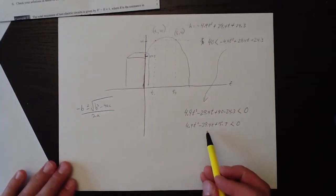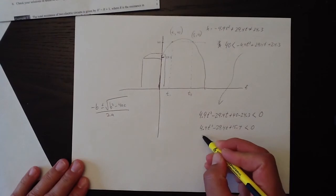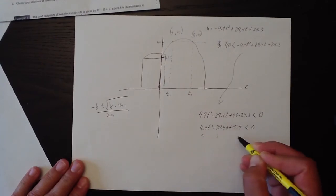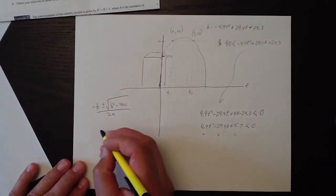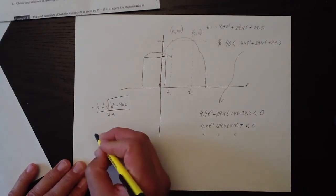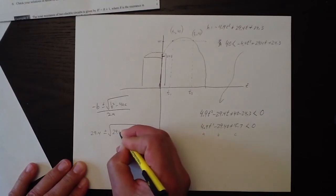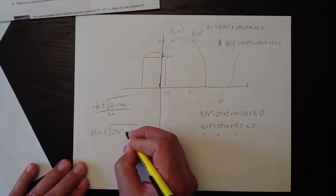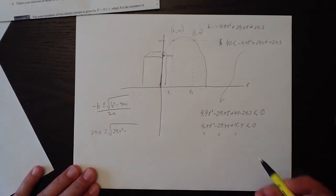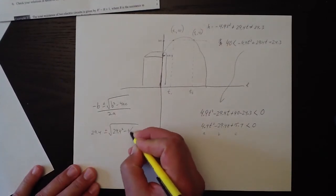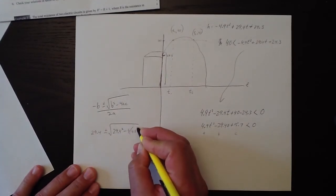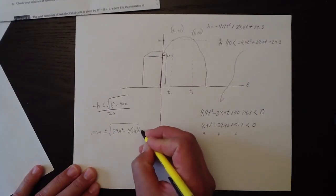And plugging these values in, this is our a and our b and our c. So minus minus 29.4 is 29.4 plus or minus root 29.4 squared minus 4 times a times c, 4 times 4.9 times 15.7.